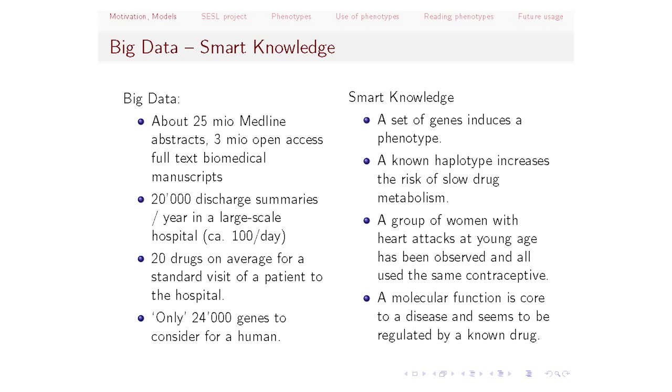On the smart knowledge side: if you know the genes of a patient, you want to know the phenotype. A typical problem is that there's a certain haplotype — the SNPs of the patient — and the patient has a slow drug metabolism, so the drug functions longer and he gets more side effects. Or you have a group of women known in one or several hospitals who are having heart attacks at a young age, and they've all taken the same contraceptive. This actually happened with a Bayer contraceptive two or three years ago. A molecular function is core to a disease and seems to be regulated by a drug.